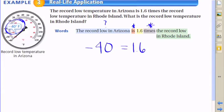Write down the important things and the numbers and values associated with them. The record low is -40 equals 1.6 times the record low in Rhode Island. We don't know what that is, so let that be the variable. So there's our equation: -40 = 1.6x.